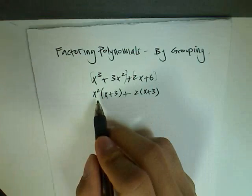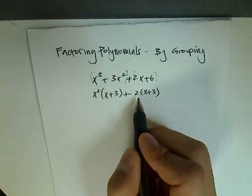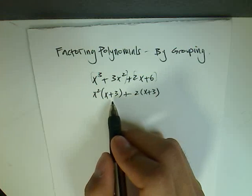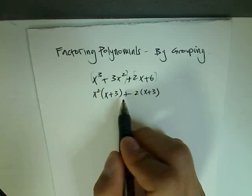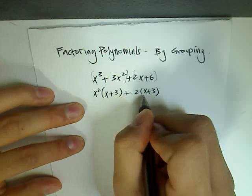So as you can see, I factor out an x squared from the first term and a 2 from the second term. We're not done yet because we have another common factor between these two polynomials. We have an x plus 3 common, as you can see.